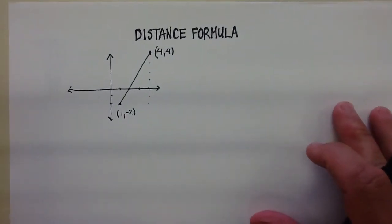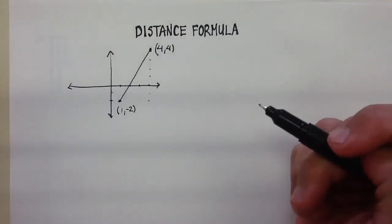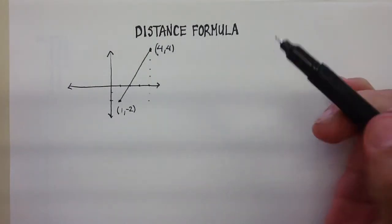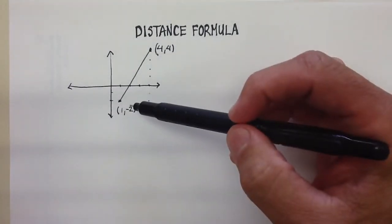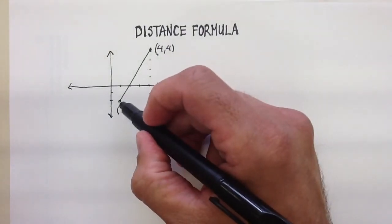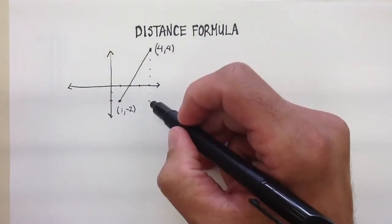In this video, I'm going to talk about something called the distance formula. And you use the distance formula when you have a grid of some kind, x, y axis, and you want to find the distance between two points that are not on a straight line.